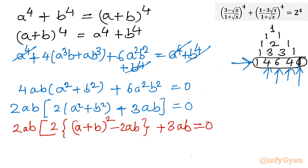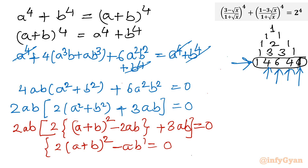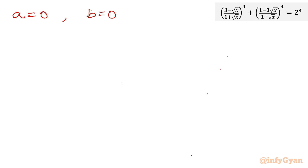Putting it together with the 2ab factor outside, I can consider 2(a plus b) whole square minus 4ab plus 3ab, so I write minus ab equal to 0, with 2ab outside. Now it is clear the solutions are a equal to 0, b equal to 0, and the curly bracket equal to 0. So the three equations are: a = 0, b = 0, and 2(a plus b)² = ab.